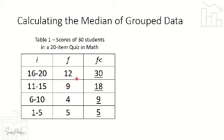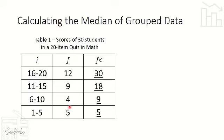So our F less than values are 5, 9, 18, and 30. This means, for example, 30 students scored below 20, and 18 students scored 15 and below — that is, all students in the 1–5, 6–10, and 11–15 intervals combined.